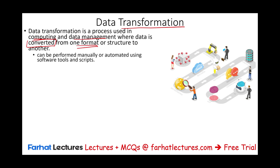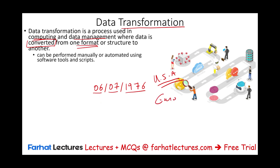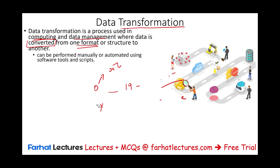For example, a date can be written in more than one way. You could write a date as 06-07-1976. If we read this, it's June 7th, 1976 — that's how you would read it if you're looking at US data. In Europe, they put the day first, so this would be read as the 6th of July, 1976. If you are dealing with data from two different databases, you might have to do what's called data transformation to change how it's being done.